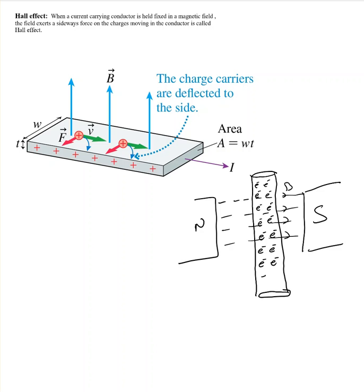We know that these free electrons are randomly moving, so the final displacement is going to be zero if there is no voltage applied to this conductor. These electrons keep moving around in the same place — the displacement is zero. There are thousands of millions of free electrons, but they are not going anywhere.